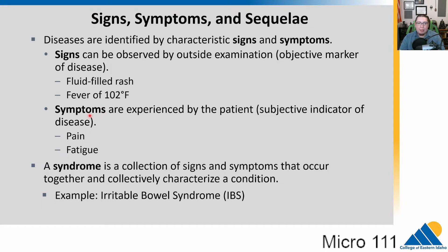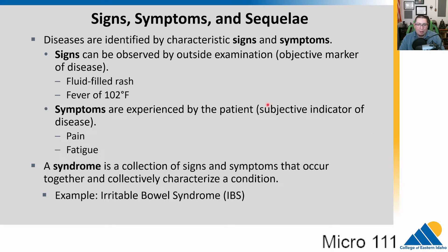A symptom is something experienced by the patient — it's subjective. Signs are objective; anyone can see them. Symptoms are subjective; only the patient can tell us those. Pain — what's your pain scale on a scale of 1 to 10? Fatigue. These are things that maybe we can observe, but we can't quantify them, whereas a patient can tell us precisely how much pain they think they're in.